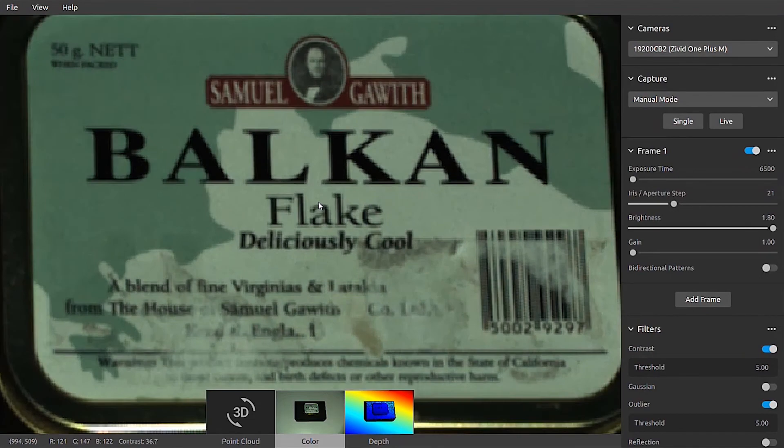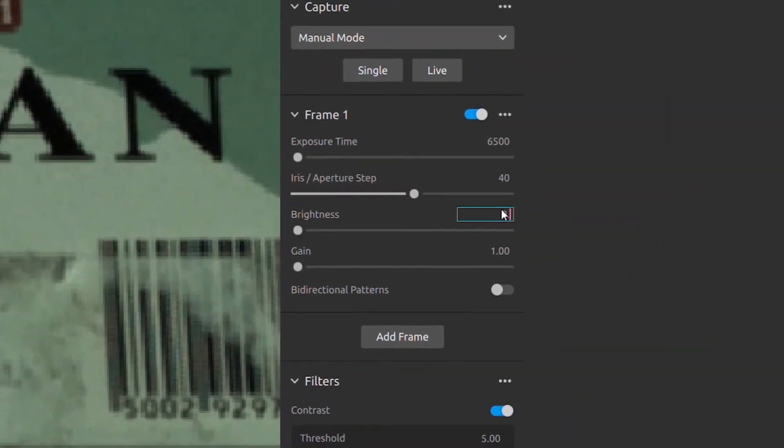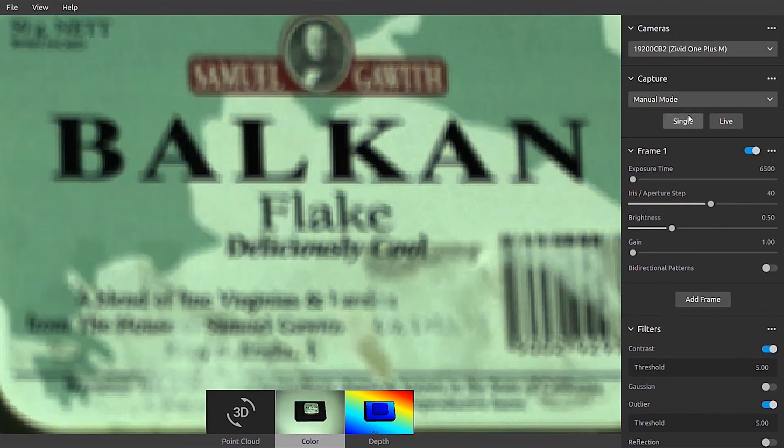It is important to have in mind that larger apertures provide shallower depth of field. Objects outside the depth of field appear blurry, which results in increased noise.